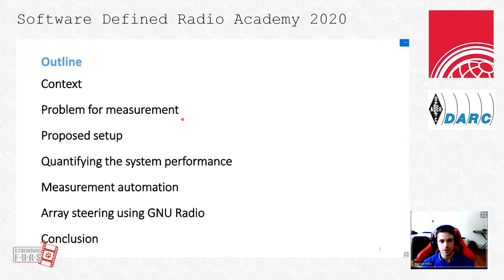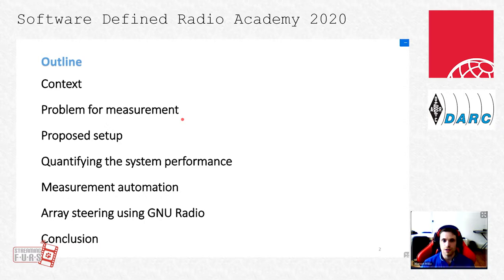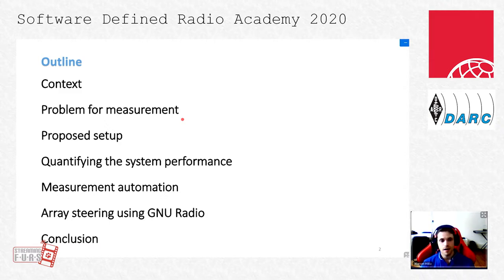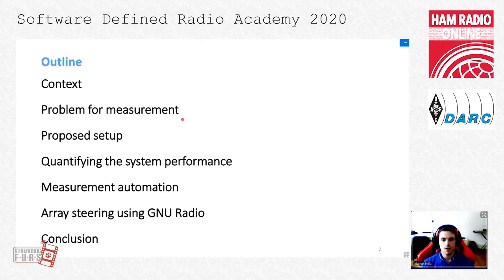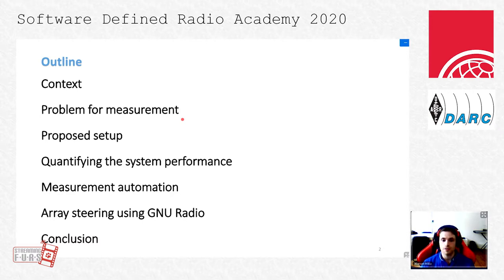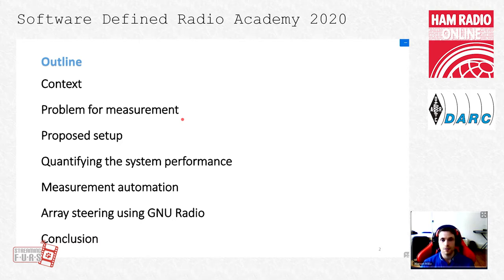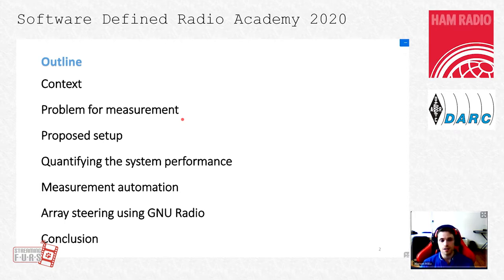The outline of this presentation is as follows: first I will explain a bit more about the background that motivated our work, then I will explain more details about the original problem we faced with our measurements and the experimental setup we proposed to solve them. I will explain about the criteria we proposed to quantify our system performance, then detail how we automated our measurement process. Finally, I will tell you about the array steering blocks we implemented using GNURadio before I quickly conclude.